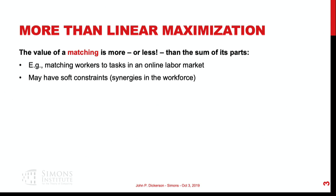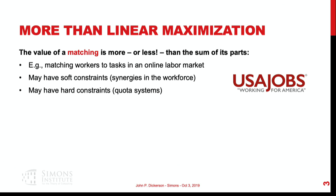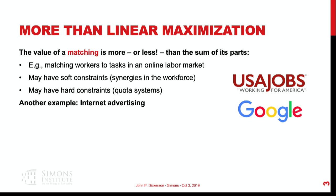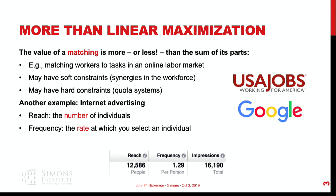We may have soft constraints — synergies in the workforce. Say you're hiring ten programmers: maybe you want five who program in Java and five on the front-end side in HTML and JavaScript. We may also have hard constraints. There's been nice recent work in the matching literature on diversity via quota constraints. In internet advertising, we might want to balance reach and frequency — where diminishing returns kick in if you hit the same person's eyeballs with the same advertisement 15 times in a row.